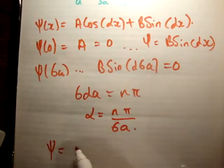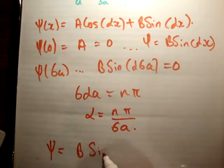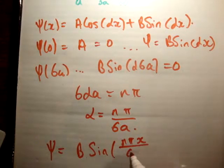Therefore, ψ is equal to B times the sine of nπx over 6a.